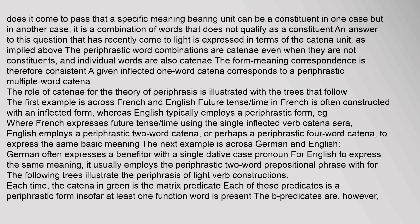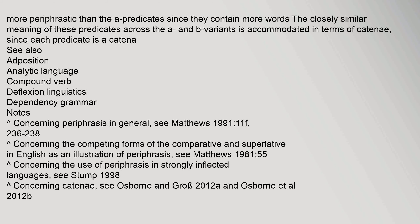The following trees illustrate the periphrasis of light verb constructions. Each time the catena in green is the matrix predicate. Each of these predicates is a periphrastic form insofar as at least one function word is present. The B predicates are more periphrastic than the A predicates since they contain more words. The closely similar meaning of these predicates across the A and B variants is accommodated in terms of catenae, since each predicate is a catena.